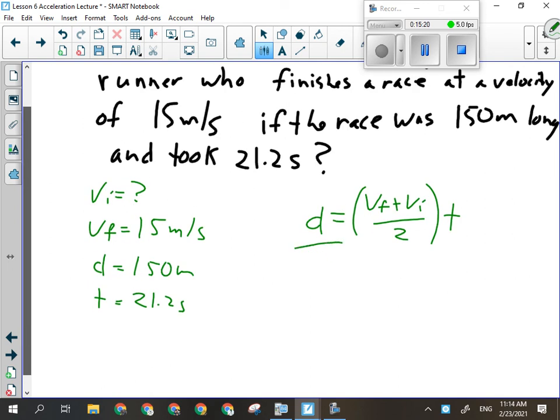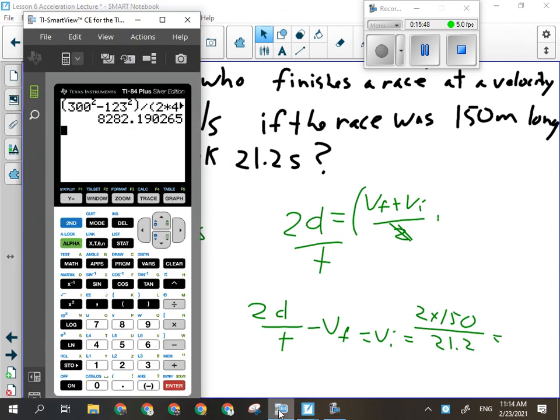So I'm looking for VI. I'm going to divide both sides by T. That's going to get rid of the brackets. And then all I have to do is multiply both sides by 2 and subtract VF. So I'm going to have 2 times D over T minus VF will give me VI. So that'll be 2 times 150 divided by the time which was 21.2, gives us an initial velocity of 14.1. Oh, I forgot to subtract VF. You're absolutely right. Minus 15.